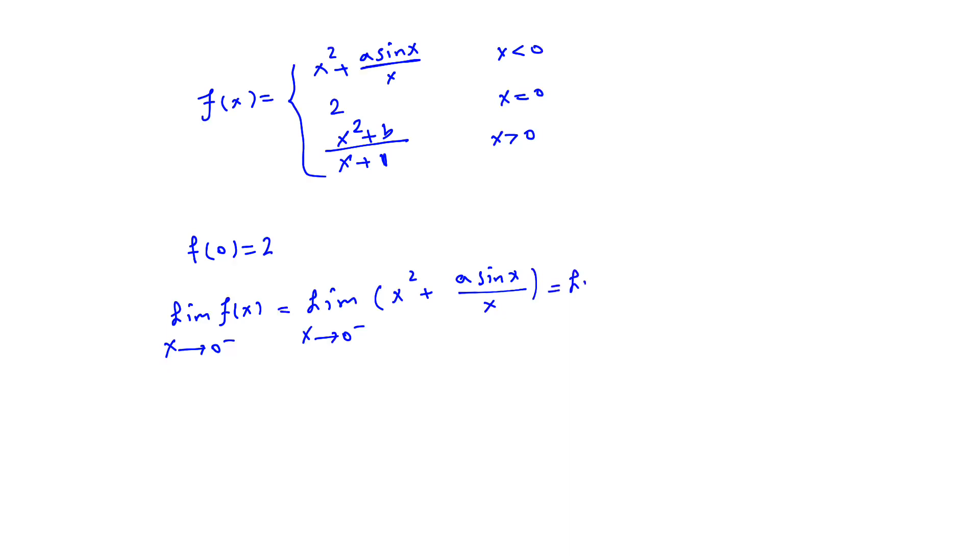This is the same as the limit of x² plus a times the limit of sine x over x as x approaches 0. Since the limit of x² is 0 and the limit of sine x over x as x approaches 0 is 1, the left side limit of f(x) as x approaches 0 is a.